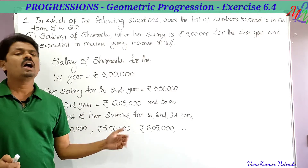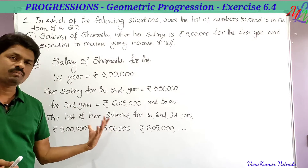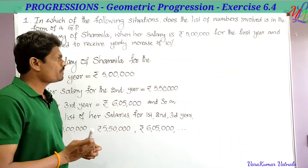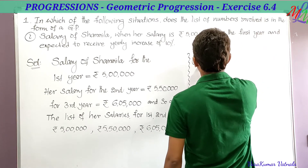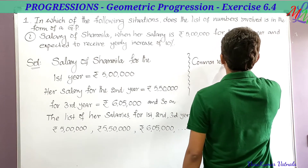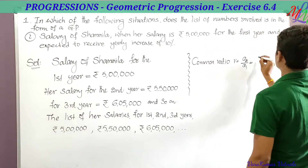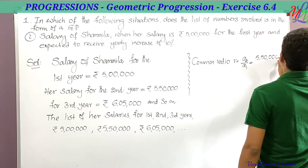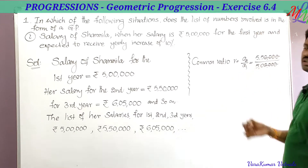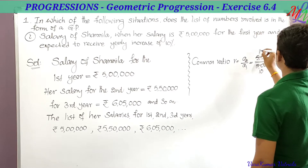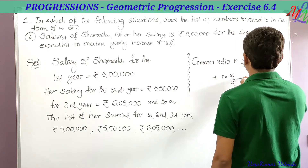By finding the common ratio we can decide whether it forms a GP or not. If the common ratio is equal, it forms a GP; otherwise it does not. The common ratio r is found by computing a2 divided by a1. Here a2 is 5,50,000 and a1 is 5,00,000.